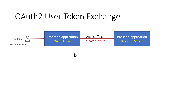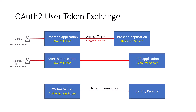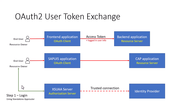This is the simplest workflow. Here we have the end user, a SAPUI5 application for the front-end, and a CAP application for the back-end. On SAP BTP, we have the XSUAA server which has a trusted connection to the identity provider. To start off, the end user needs to log in to access the front-end application, so step one is to log in using the XSUAA server which delegates authentication to the identity provider.